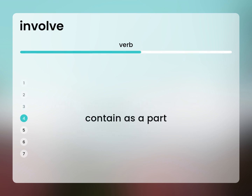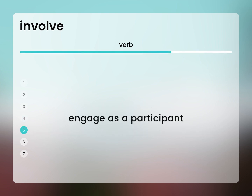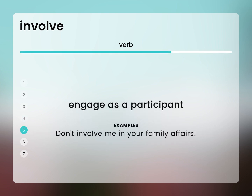Contain as a part. Dinner at Joe's always involves at least six courses. Engage as a participant. Don't involve me in your family affairs.